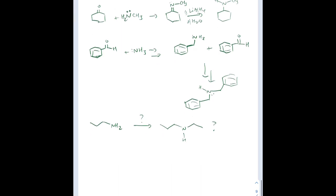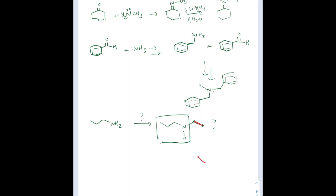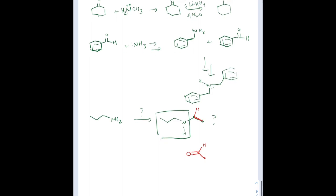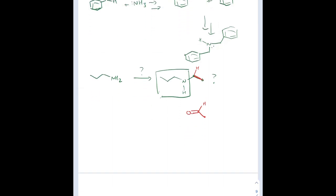Let's say we want to make an amine from propylamine using reductive amination. We isolate the propylamine portion and look at what we actually added — two carbons. That means our carbonyl group, because that's what reductive amination acts on, has to have two carbons, plus a hydrogen — so that's acetaldehyde. We just use propylamine, attack acetaldehyde, and reduce it with sodium cyanoborohydride or lithium aluminum hydride to get our desired secondary amine product.